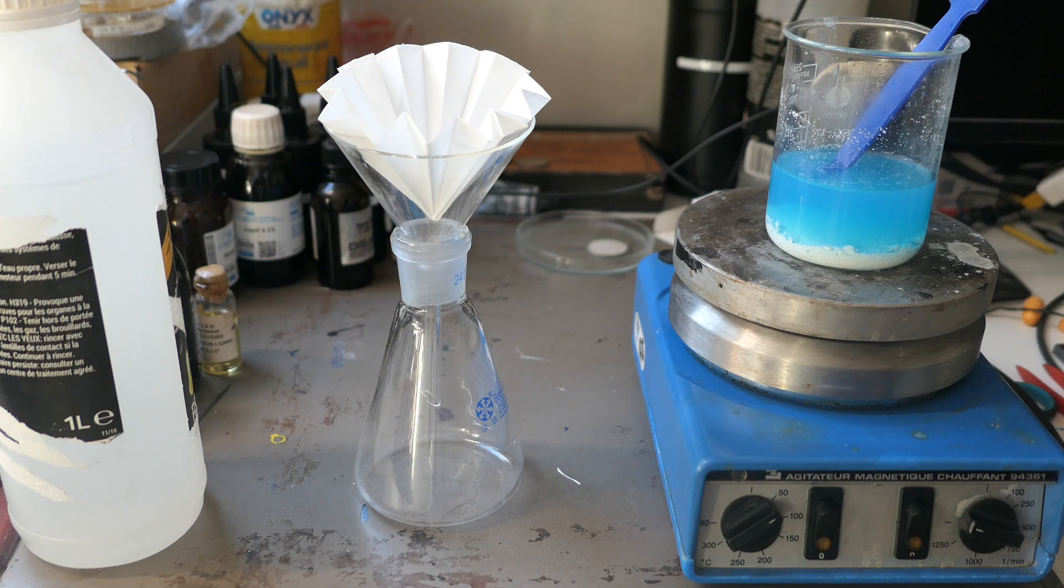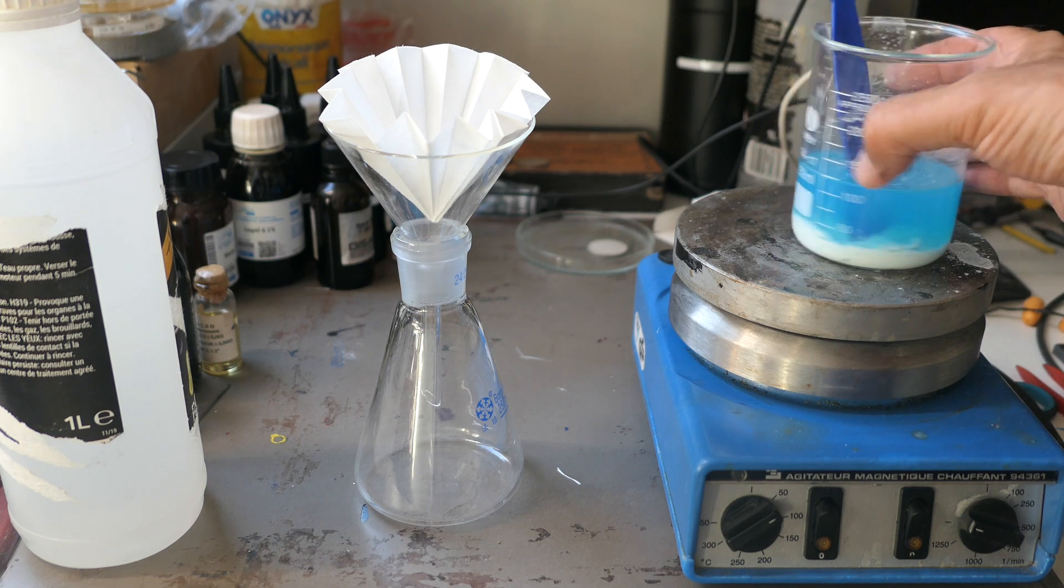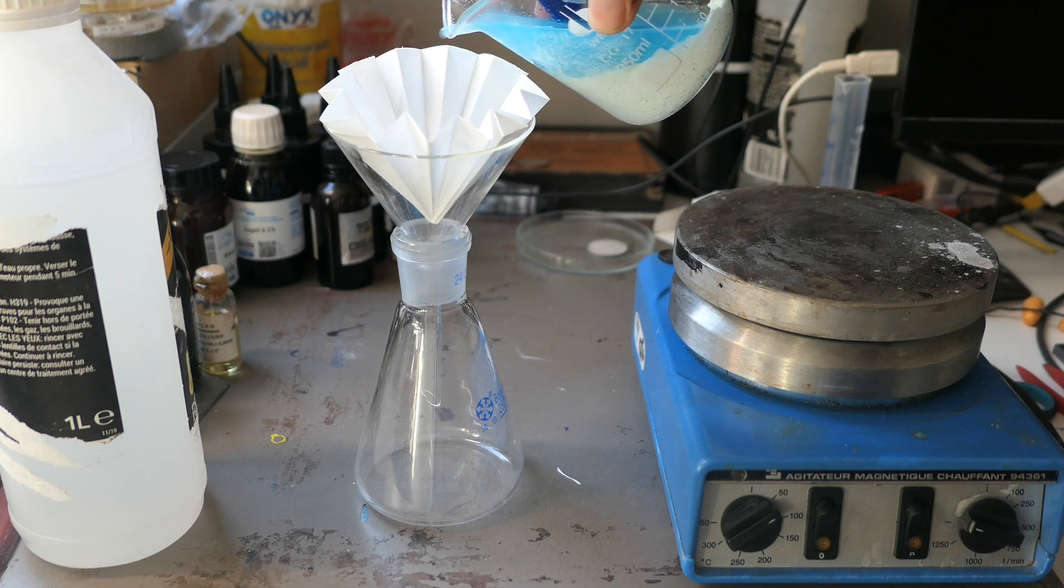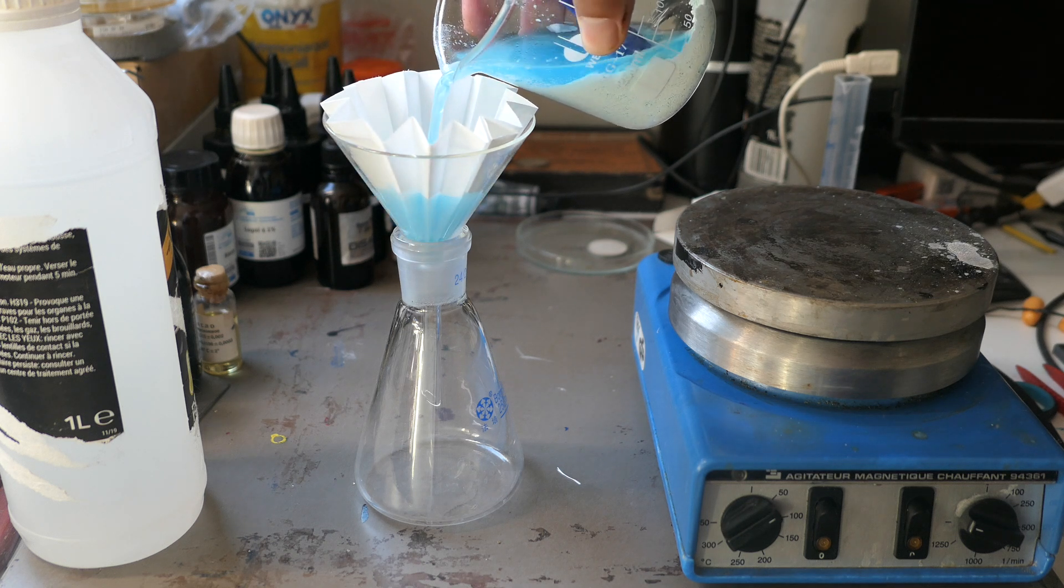Next, filter the precipitate through a coffee filter if you don't have a special filter. To obtain a pure product, we need to eliminate as many soluble metal salts as possible.